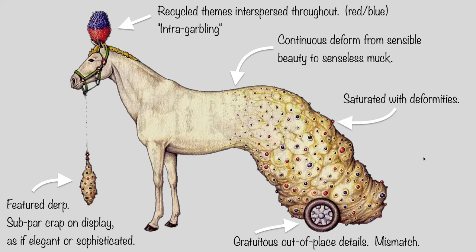So here are the ways in which this image is similar to the protocol we're dealing with. I'll just go around and read these. Recycled themes interspersed throughout. Intra-garbling, or inter-garbling depending on the case — we see the red-blue, we see the polka dot type pattern recycled over here. So that's a common thing, just recycling one theme or motif in a different format elsewhere.